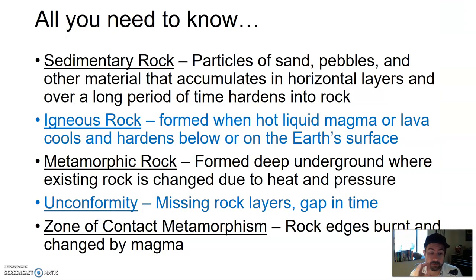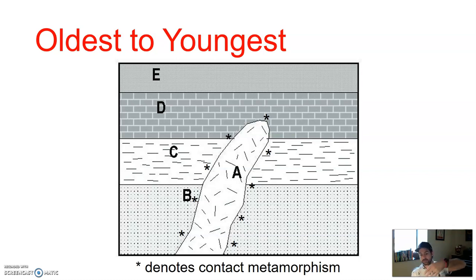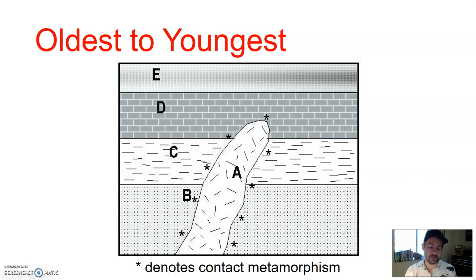Just having a basic understanding of the types of rocks, unconformities, and this idea of zone of contact metamorphism, you can look at a rock outcrop and figure out what happened oldest to youngest. There's a lot of power in that. We don't need to know exactly the names of the rocks or the absolute age — we can look relative to one another and come up with a pretty good idea. When we come back, we'll break this down oldest to youngest and figure out how to put things in relative age order.